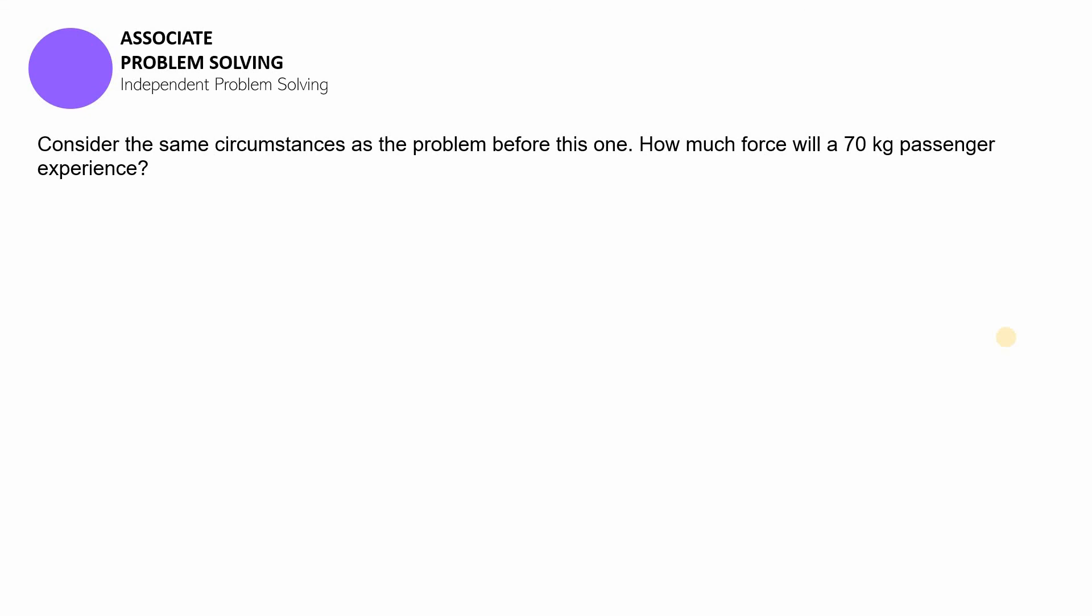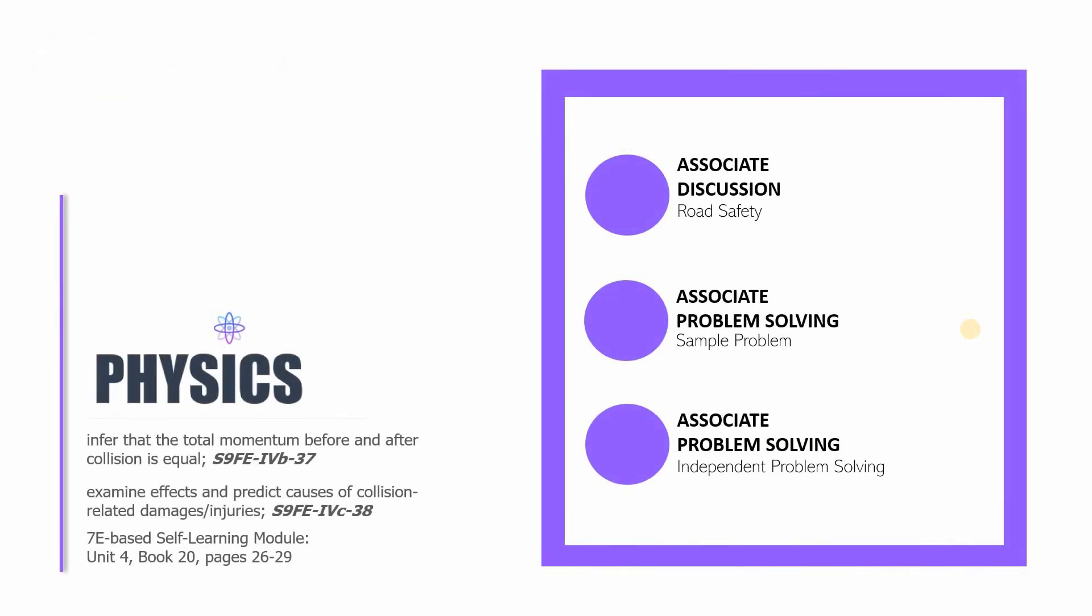Are you done? The answer that you should be getting is 6200 newtons. Did you get this correctly? Okay, so that is it for this edition of Physics 9. Remember that we were able to cover the following: we discussed road safety, and then we made some discussions related to problems on road safety by applying the principles of impulse and momentum, and then I let you do the problem solving on your own through the independent problem solving under Associate.